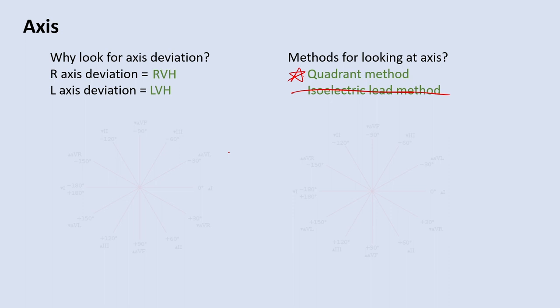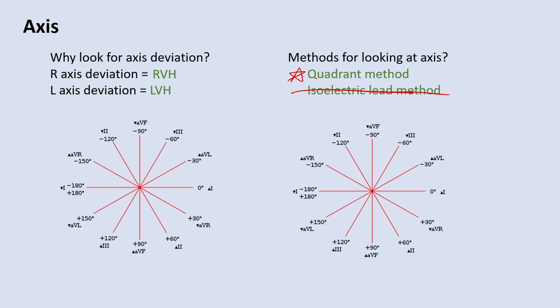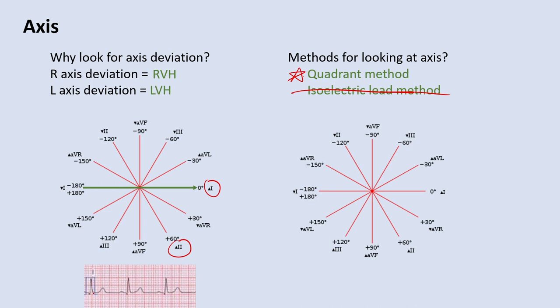You don't really need to understand how the quadrant method works to use it, but having that understanding makes you a better doctor. We have all these different leads placed during a 12-lead EKG. The ones we'll use for the quadrant method are lead 1 and lead 2. Lead 1 is created when you make the right arm negative and the left arm positive. Any depolarization going in that direction causes a positive QRS complex. So a positive QRS in lead 1 tells you the depolarization is somewhere in that direction.